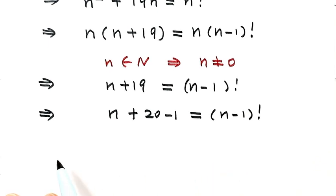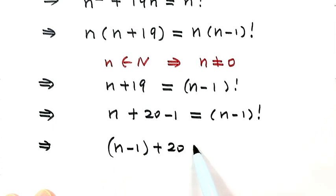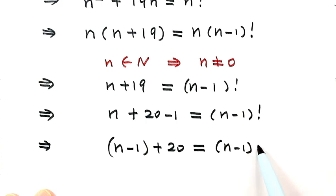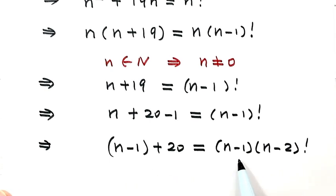Next, we can combine n with minus 1, giving us (n minus 1) plus 20 equals n minus 1 factorial. Then we expand n minus 1 factorial as (n minus 1) times (n minus 2) factorial.